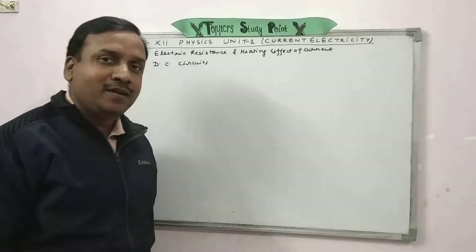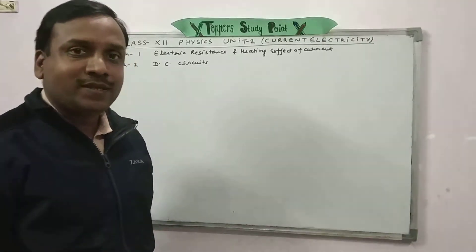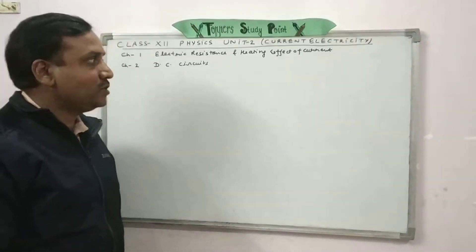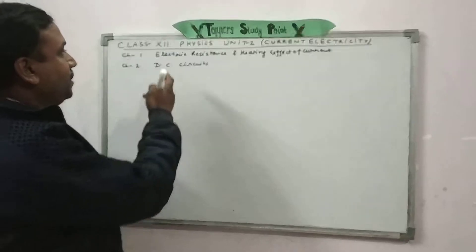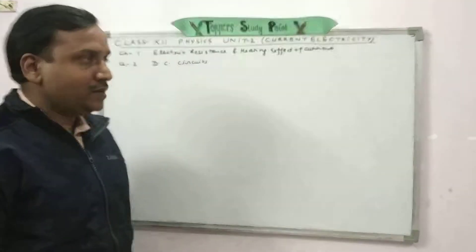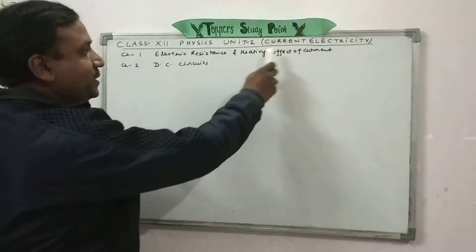Hello friends, I am Ajit Ajwal. Today's class is about the formulas of unit 2 in physics: current electricity.